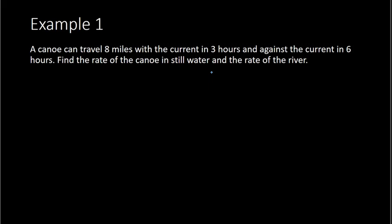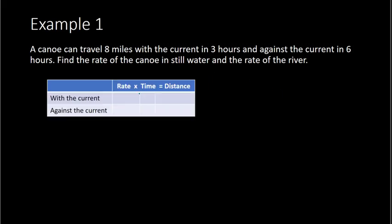And we want to create a table as well to help us visualize what we're doing. So we have on the columns, rate times time equals distance. For the rows, we have with the current and against the current. Those are our two scenarios.